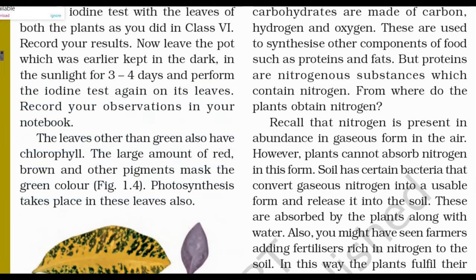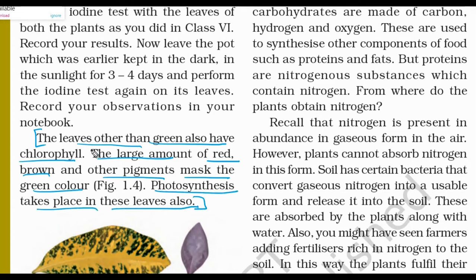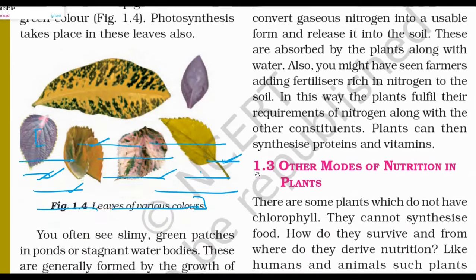From this observation: leaves other than green also have chlorophyll. Large amounts of red, brown and other pigments mask the green color. Photosynthesis takes place in these leaves also. So non-green leaves — which are red and brown — also carry out photosynthesis, because they still contain chlorophyll hidden beneath the other pigments.